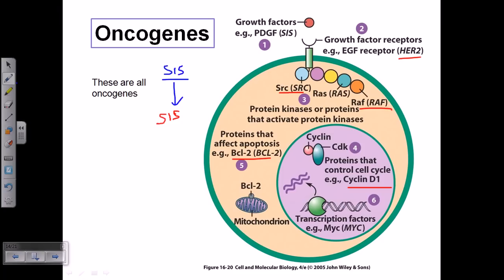The sixth kind is transcription factors, such as Jun, FOS, and MYC. These are also important oncogenes. All of these genes, when present in a normal healthy cell, exist as proto-oncogenes and won't cause any harm. The proteins they produce are required for proper functioning of the normal cell.